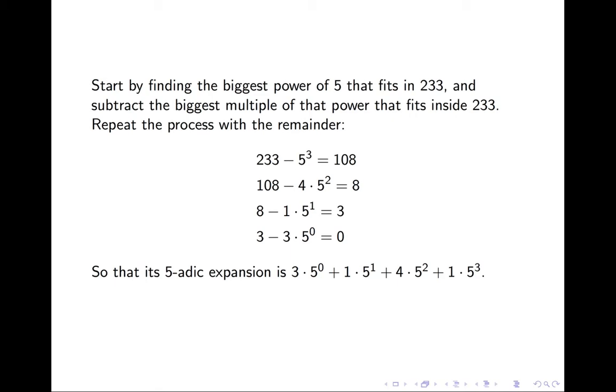Then we see that 4 times 5 squared fits inside 108. So we subtract it. And then we carry on until we reach 0.